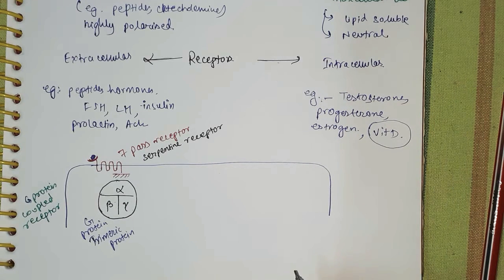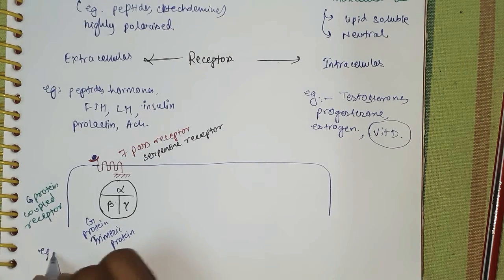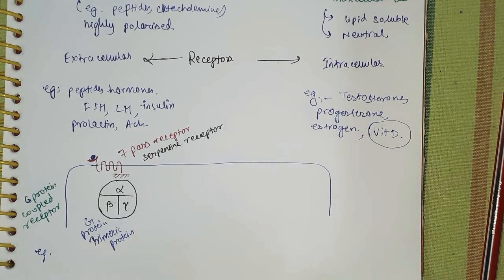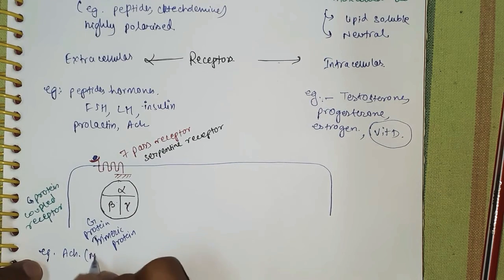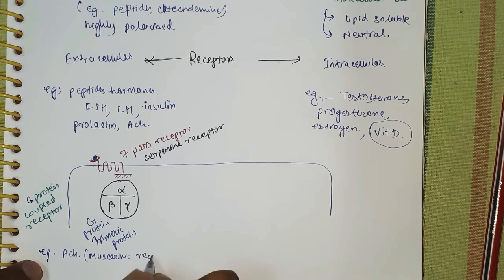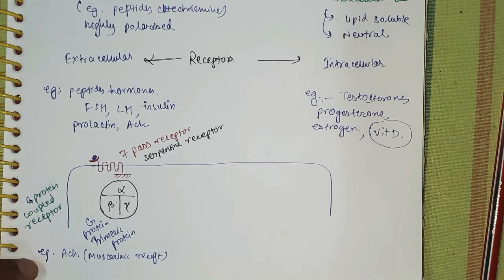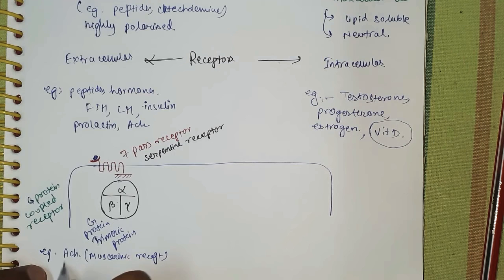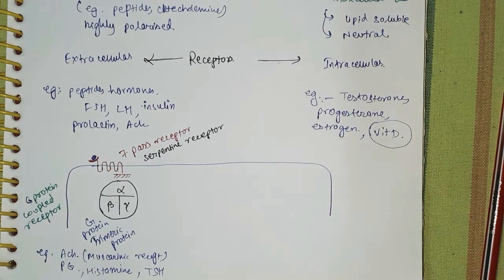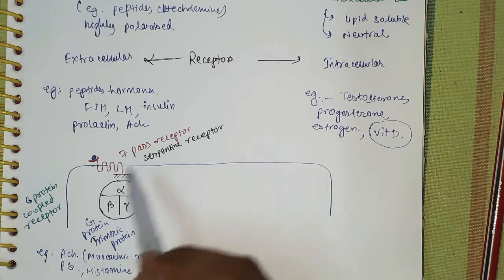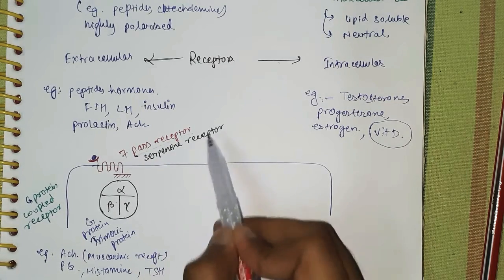Examples of G protein-coupled receptors include acetylcholine-mediated muscarinic receptors, prostaglandins, histamine, and TSH. All of these come under G protein-coupled receptors, also called seven-pass or serpentine receptors.